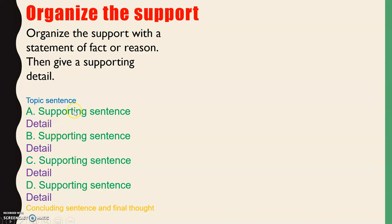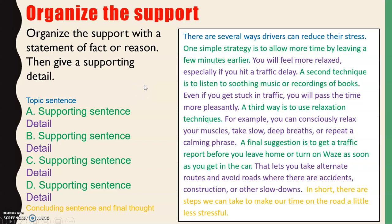Each detail is related to its supporting sentence. We can have two, three, four, five, or as many supporting ideas as we want. In a paragraph, we see the topic sentence — "There are several ways drivers can reduce their stress" — followed by the main supporting idea with an example, a second supporting idea with an explanation, a third, fourth, and fifth supporting sentence, each with an explanation, and then at the end our concluding sentence.